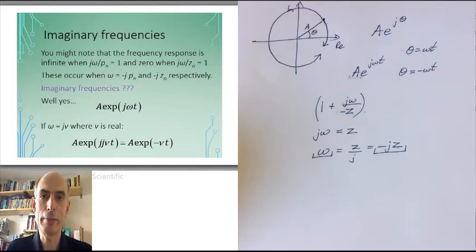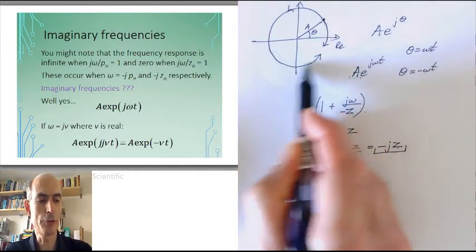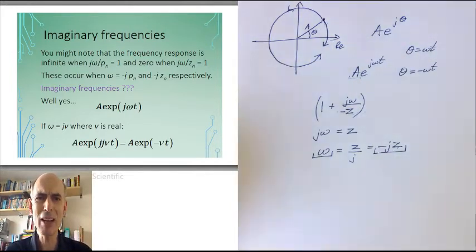It's imaginary. What does that mean? The negative frequency just goes round clockwise. But what does an imaginary frequency do?